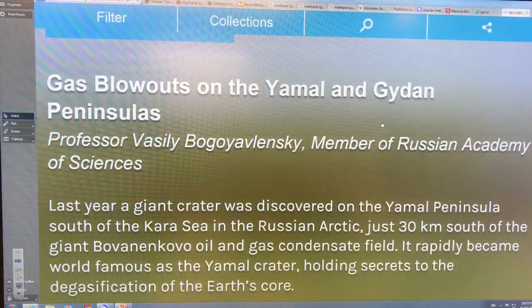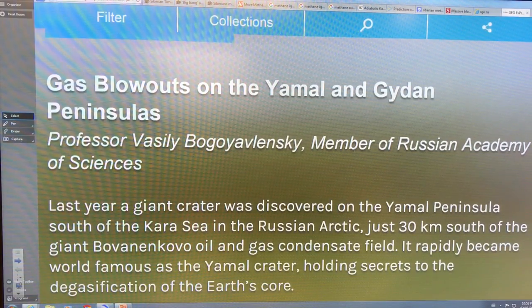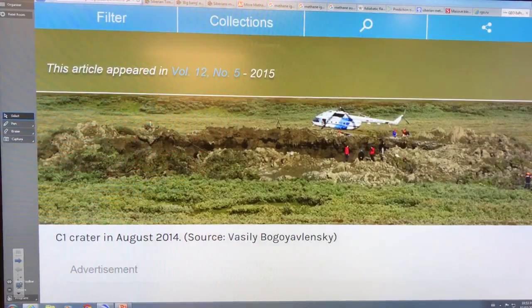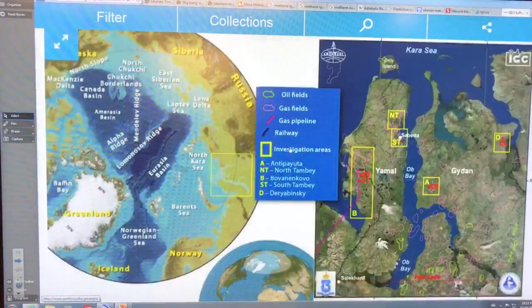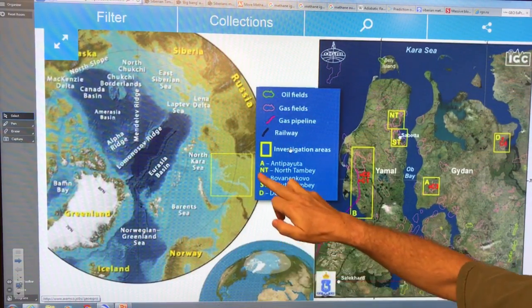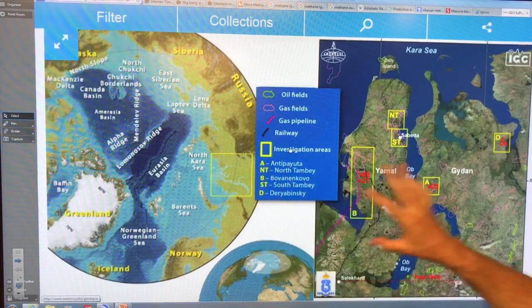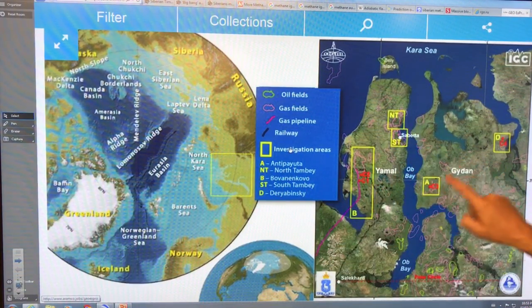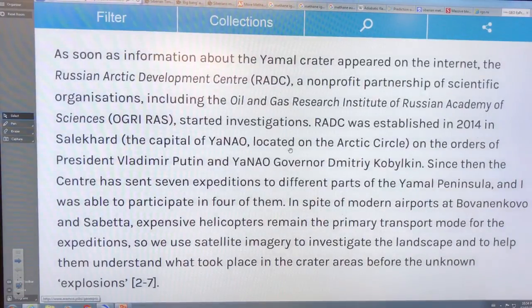So there's some information and now we have some more information on this. So this is gas blowouts. This is mostly pictures I'm going to show you on the Yamal and Gydan peninsulas. This is 2015 shortly after they discovered it. So this is the region here in the Arctic. This is the region we're talking about. This is blown up to here. This is the Yamal and the Gydan peninsula. These are regions where they found these blowholes.